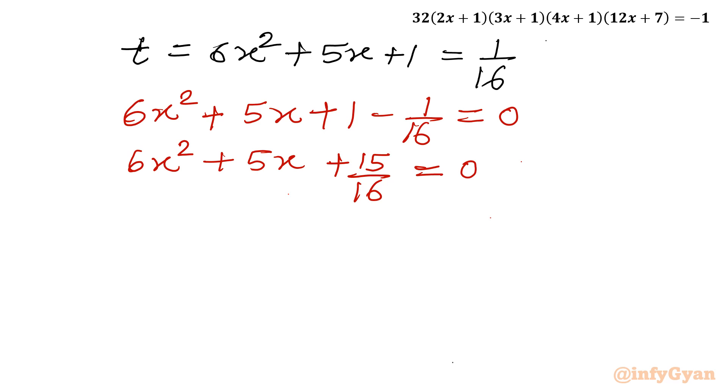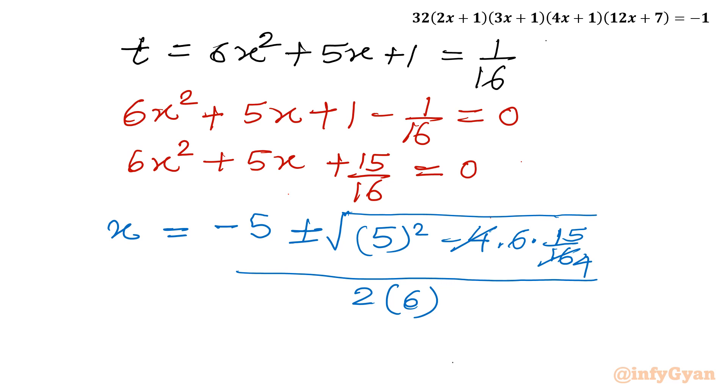Now this is a quadratic equation. I will use quadratic formula or Sridharacharya formula. So x is equal to minus b, so minus 5, plus minus under the root b squared, so it is 5 squared minus 4ac. A is 6, C is 15 over 16. And denominator is 2a, so 2 times 6. Now I will cancel this 4 and 16 by writing over there 4. Now minus 5 plus minus square root 25 minus, 15 times 6 is 90 over 4. And overall denominator is 12.